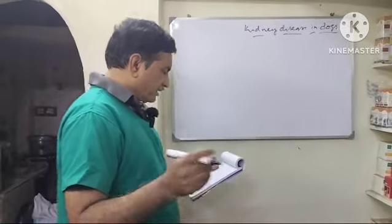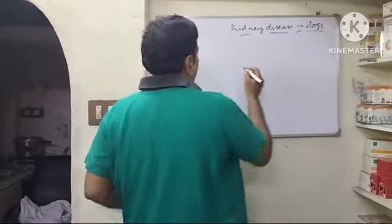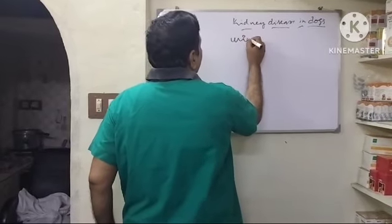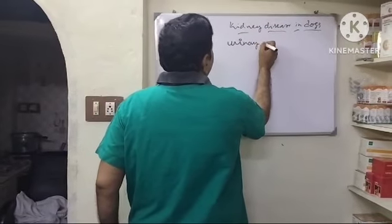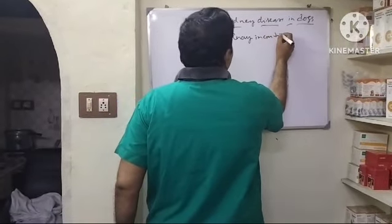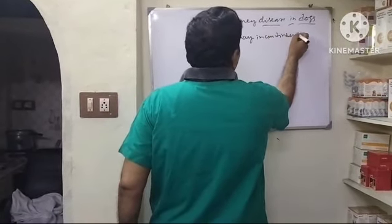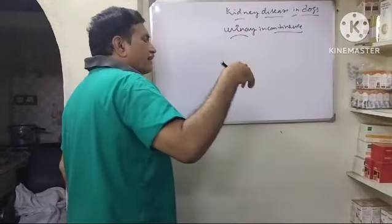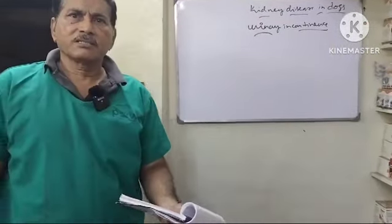The first symptoms we will talk about is urinary incontinence. Urinary incontinence is one of the first signs in dogs - the dog is experiencing urinary incontinence.